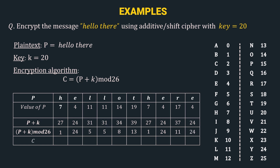The last row is the ciphertext C. We again refer to the mapping, going from right to left — that is, we see the number and correspondingly get the alphabet. For the number 1 we have B, for number 24 we have Y, for number 5 we have F, and similarly we get all other alphabets. Finally we get our ciphertext. So we have successfully encrypted the message 'hello there' using the key 20 with the additive cipher algorithm.